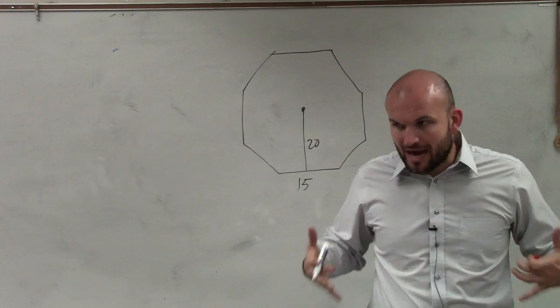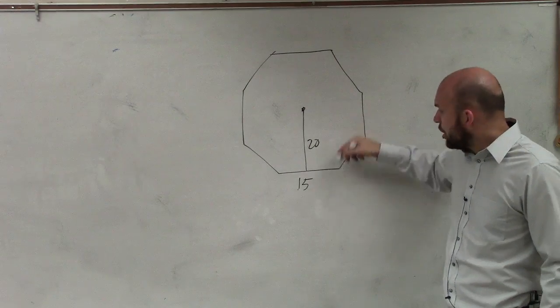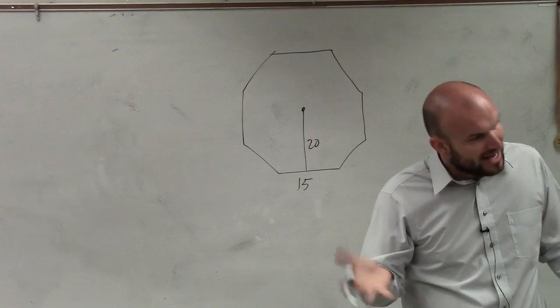And when we're talking about a regular octagon, it's the fact that all the sides are equal measure, as well as all the interior angles. That's what makes a regular polygon.